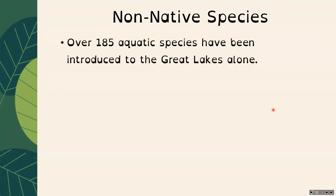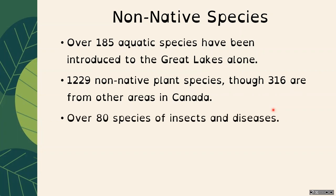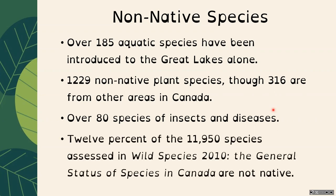Over 185 aquatic species have been introduced to the Great Lakes alone in Canada. There are about 1,229 non-native plant species in Canada, though 316 are from other areas of Canada. There are over 80 species of insects and diseases that are non-native. Overall, 12% of the 11,950 species assessed in the Wild Species 2010 general status report are non-native. So about 12% of our general species are non-native — and that number has likely grown since 2010.